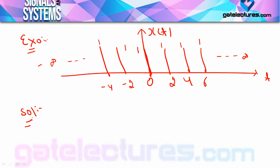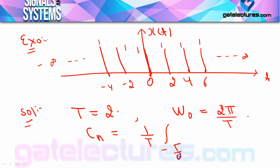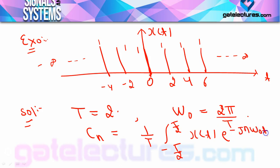First we analyze the time period of the given signal, which is clearly T = 2. Remember that ω₀ = 2π/T in Fourier series. Now writing the formula for the Fourier series coefficient cn: cn = (1/T) ∫ from −T/2 to +T/2 of x(t)·e^(−jnω₀t) dt.